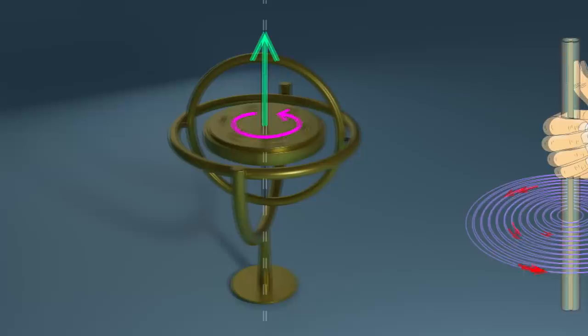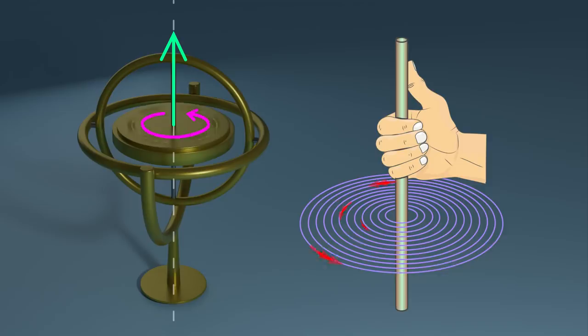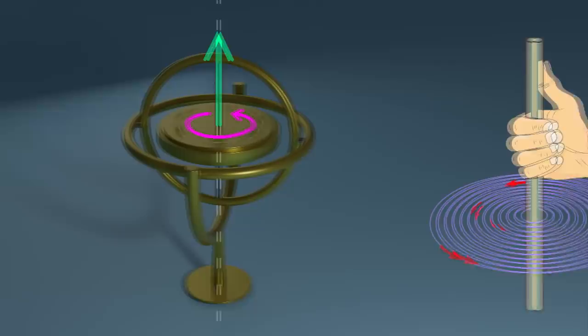A quick way of remembering it is using the right hand rule. Curl your fingers in the direction of the force you applied and your thumb tells you the direction of the torque. Anyway enough of the physics, we now have a gyroscope happily spinning away.